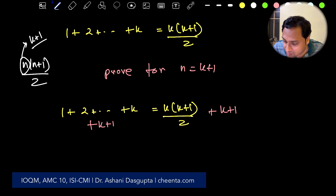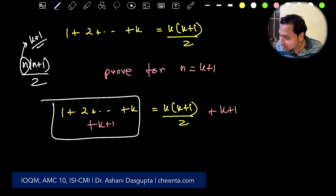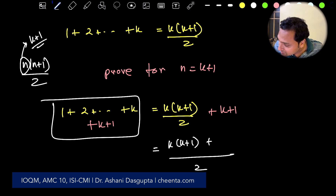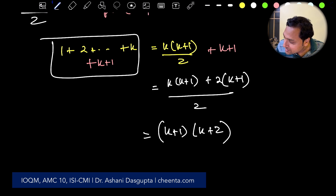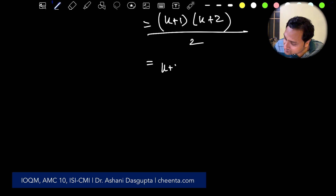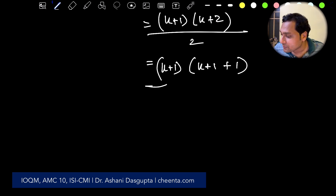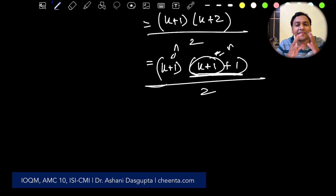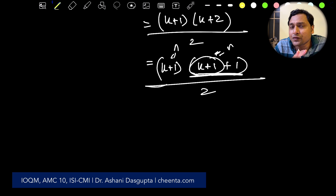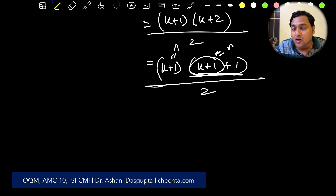To prove for n = k+1, add (k+1) to both sides. Taking the LCM on the right-hand side, you get k(k+1)/2 + (k+1) = (k+1)(k+2)/2, which is exactly the formula with n replaced by k+1 — i.e., n(n+1)/2. The proof is complete. This is called an inductive proof. You should try many problems on mathematical induction; it is especially useful at the RMO level where you need to write proofs.